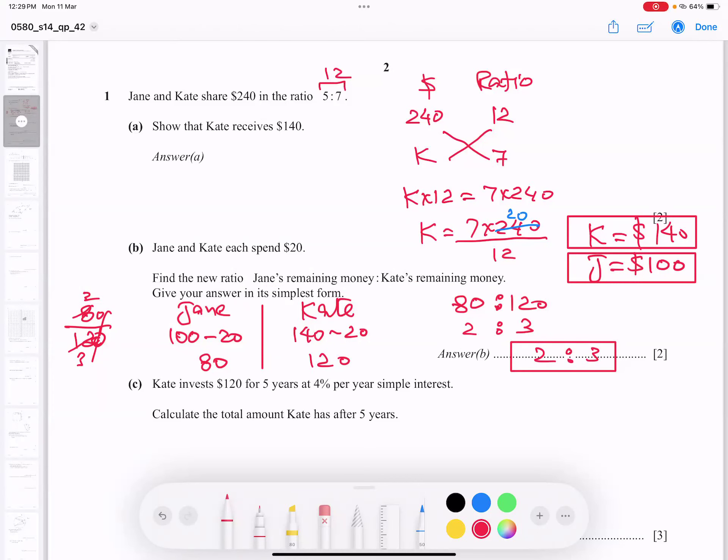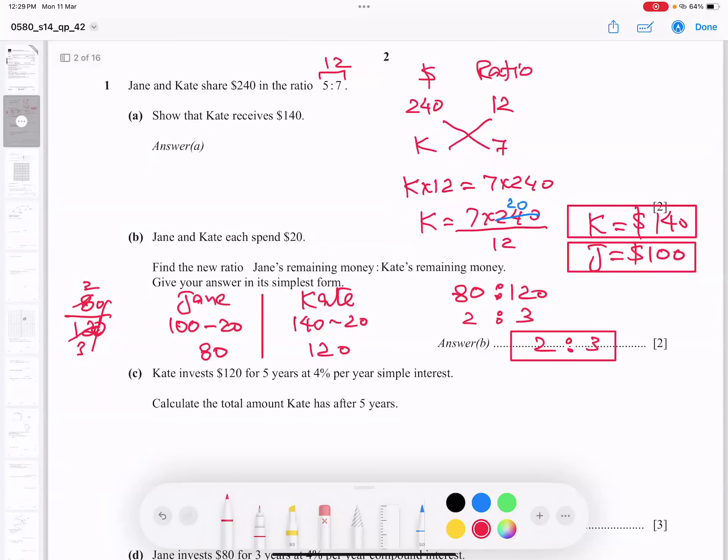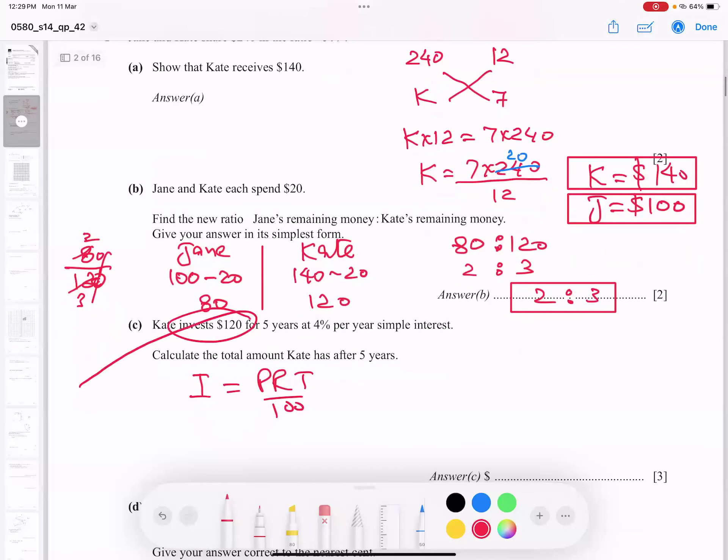The next part is Kate invests $120 for five years at 4% simple interest. What is the amount after five years? His important part here, I is equal to P, R, T by 100. So let's try it one by one. Investment is always called P. So P is 120.